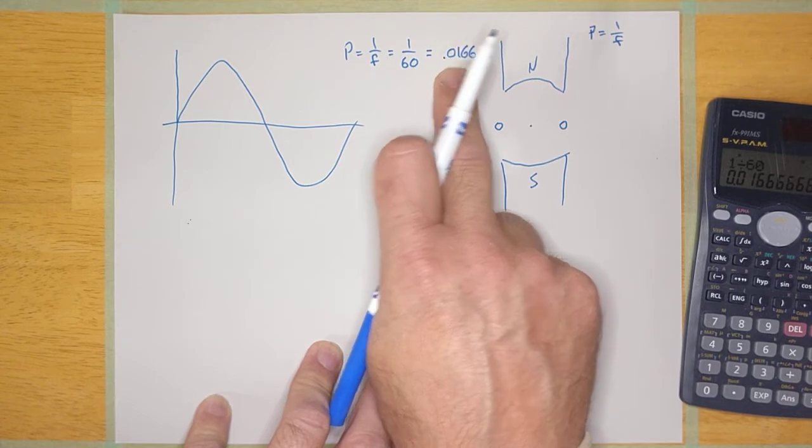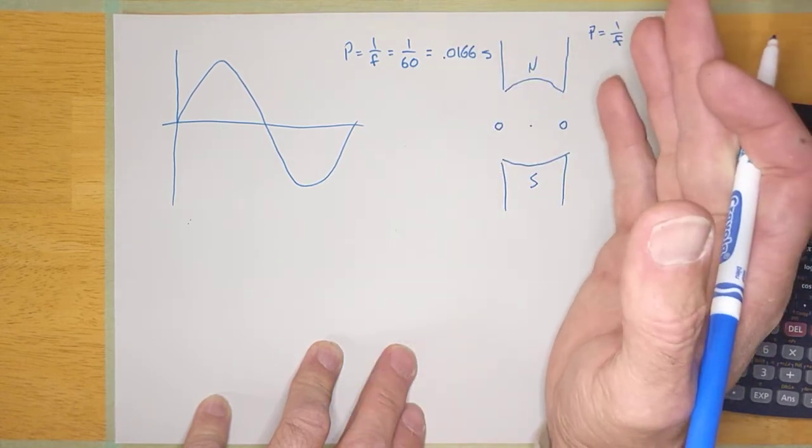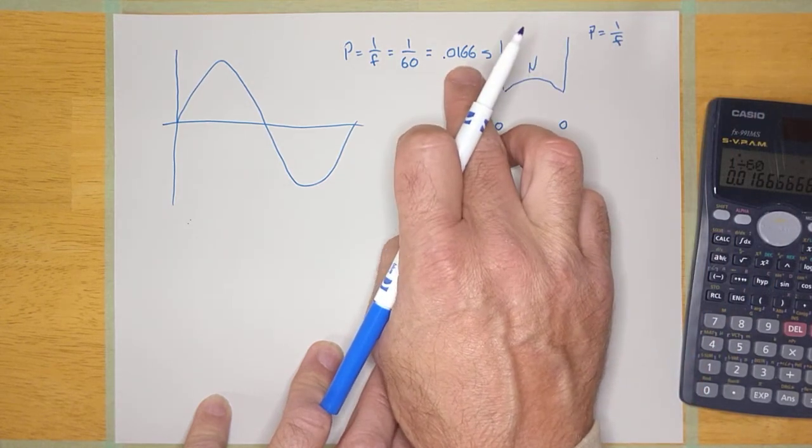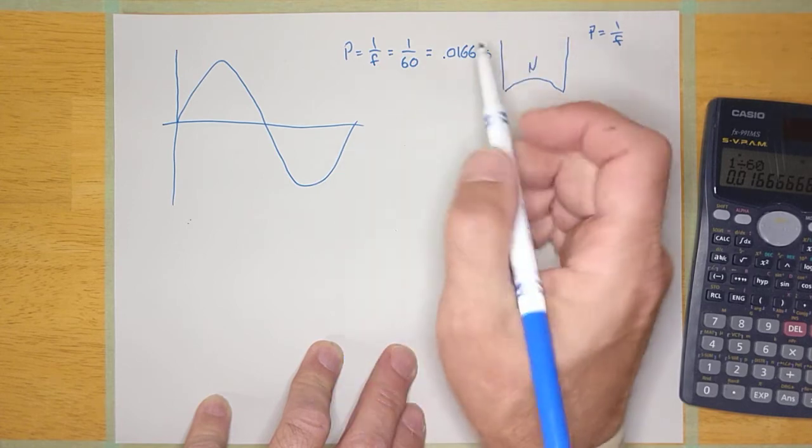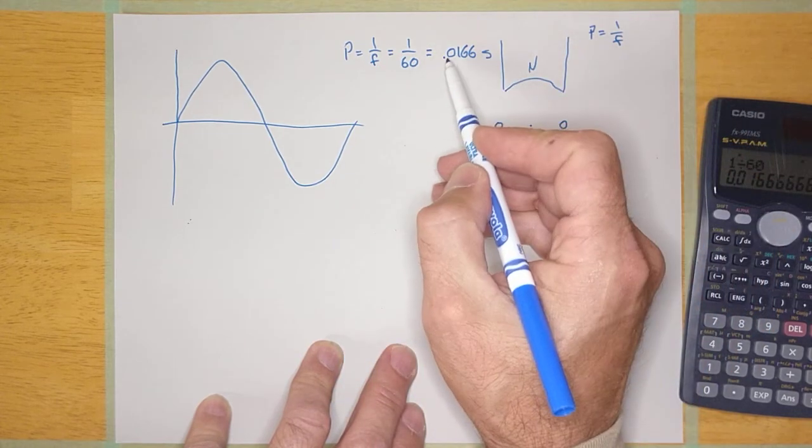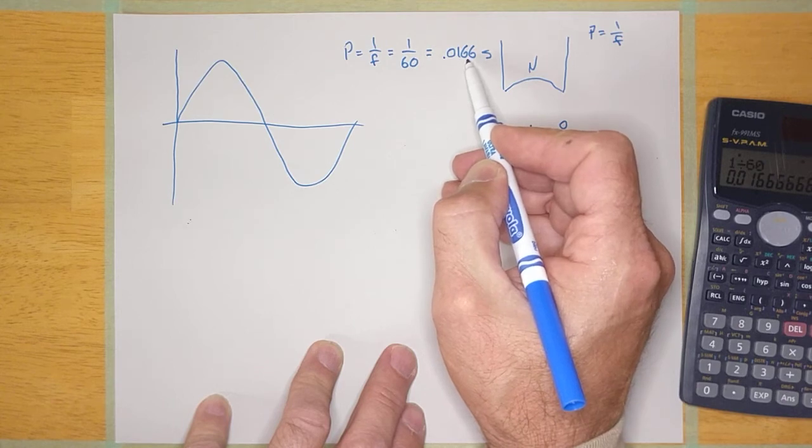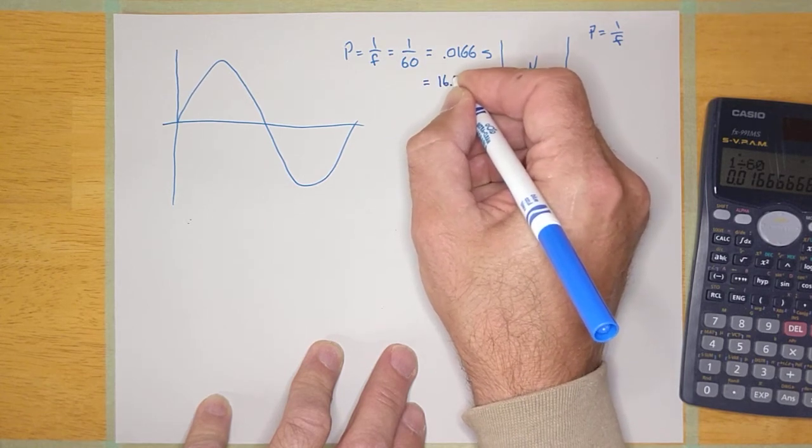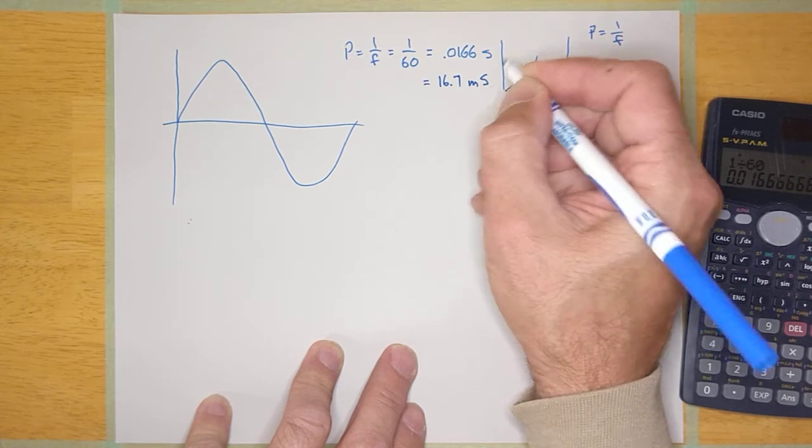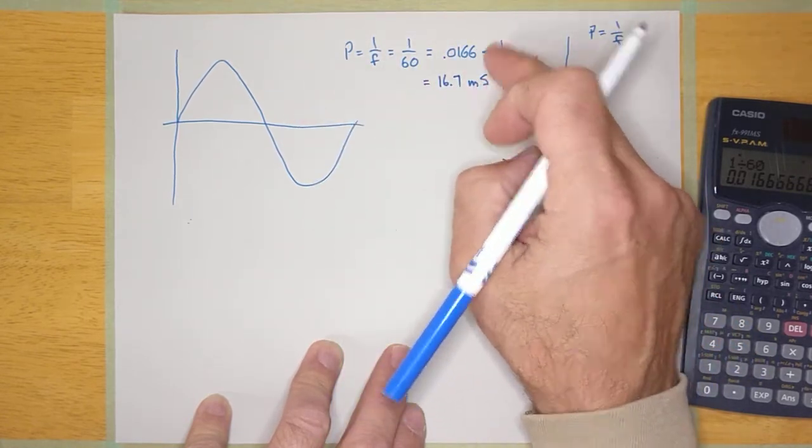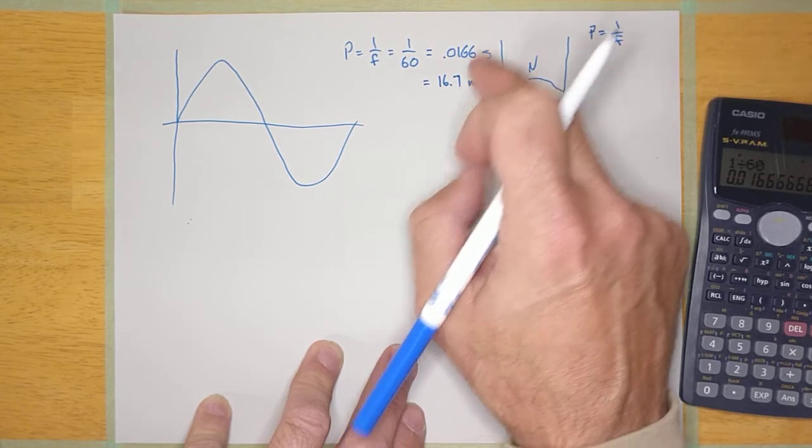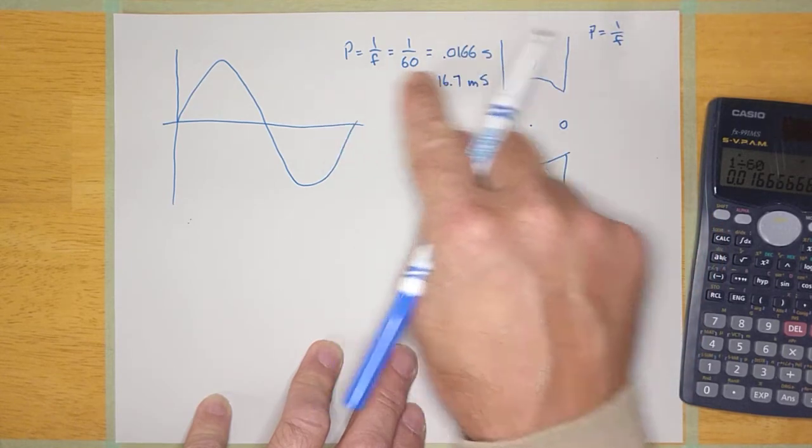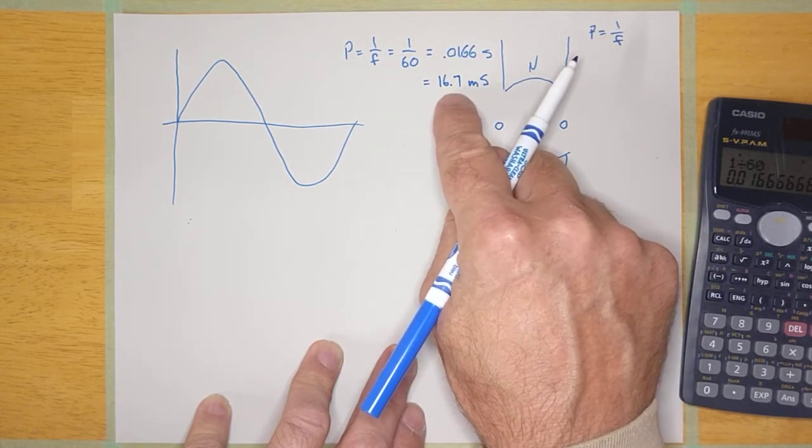And so if I wanted to convert this into milliseconds, and a lot of times you're going to see the period displayed as a time in milliseconds, how do I convert this into milliseconds? There are 1,000 milliseconds in a second, and so I'd have to move this decimal place over to the right, three decimal places. And so this would be 16.7 milliseconds. And you can see it displayed either way, but I need you guys to remember that if you're using the period in a formula, you need to have it in seconds. Don't leave it in milliseconds.